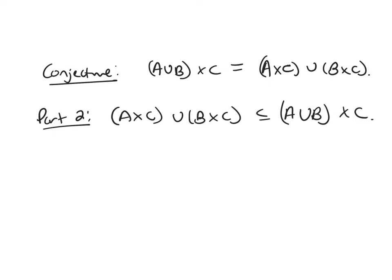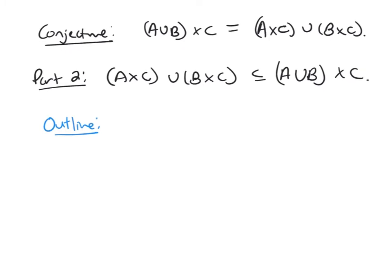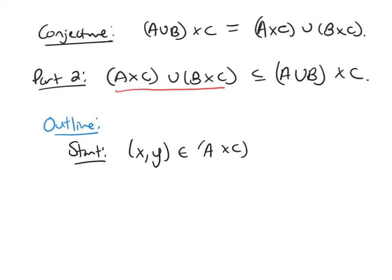We're going to start with our outline of our proof here. The start of this proof would be: I'm going to choose an element in the left-hand side. But this is a union of cross products, so my element should be an ordered pair — (x, y) in A cross C union B cross C.